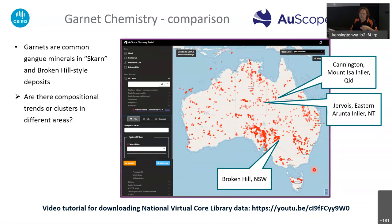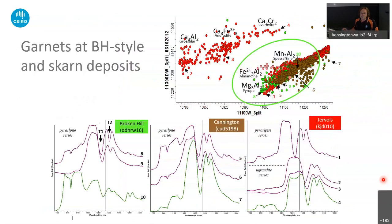Kennington was discussed as maybe a broken hill-style or maybe a skarn deposit, and I don't know if there's a real classification for Jervois — but this exercise was more about: can we map different garnet compositions in these different deposits? And yes, we can. The same plot I used for Antamina to distinguish garnet compositions now has all garnet-bearing pixels from the HiLogger data plotted. At Antamina we mainly had grossular-andradite and maybe uvarovite, whereas now with Broken Hill, Kennington, and good parts of Jervois, we've got pyrope, almandine, spessartine, and so on.